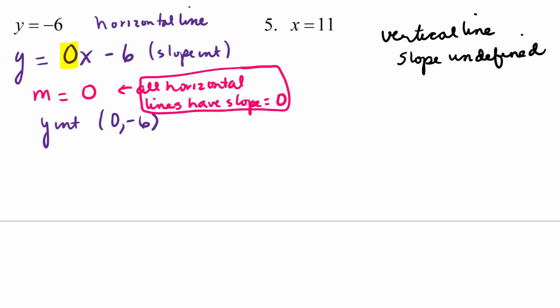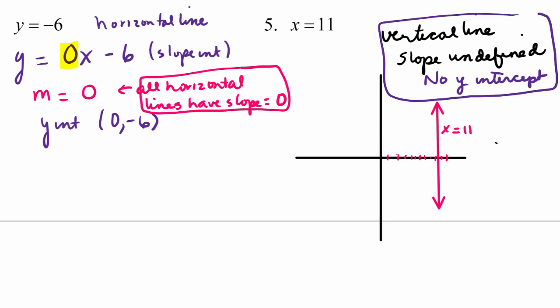And when you look at the graph of a vertical line, here's my vertical line, x equals 11. What do you see and what do you realize about the y-intercept? This one has no y-intercept. So the vertical line will have an x-intercept at 11, 0, but it does not cross the y-axis because it's parallel to the y-axis. So again, you want to just remember that all vertical lines have undefined slope, no y-intercept.